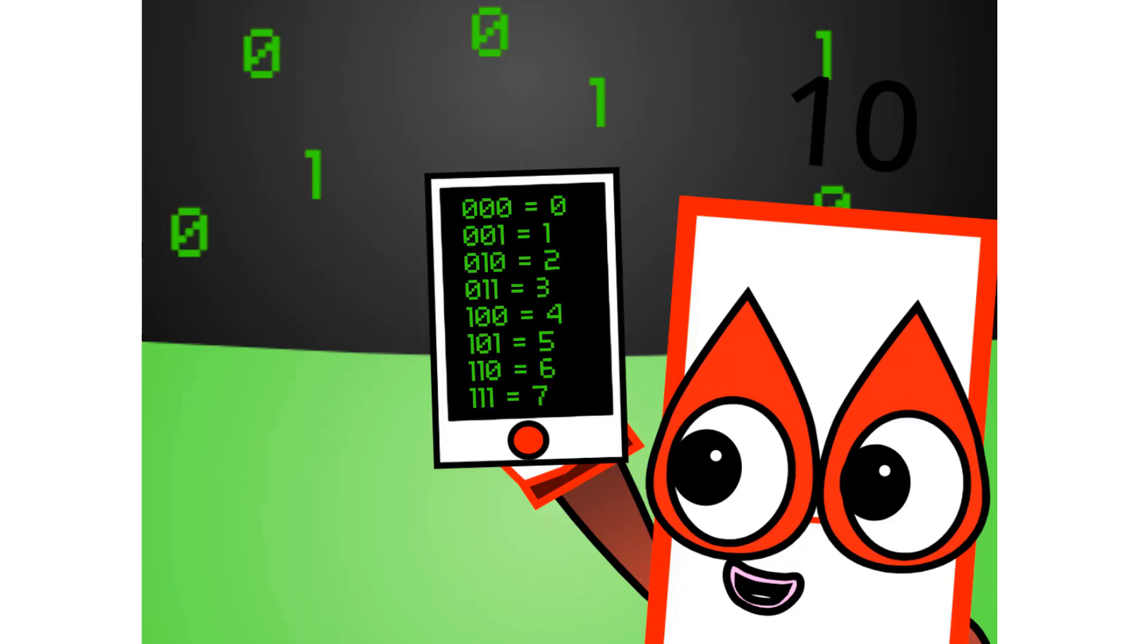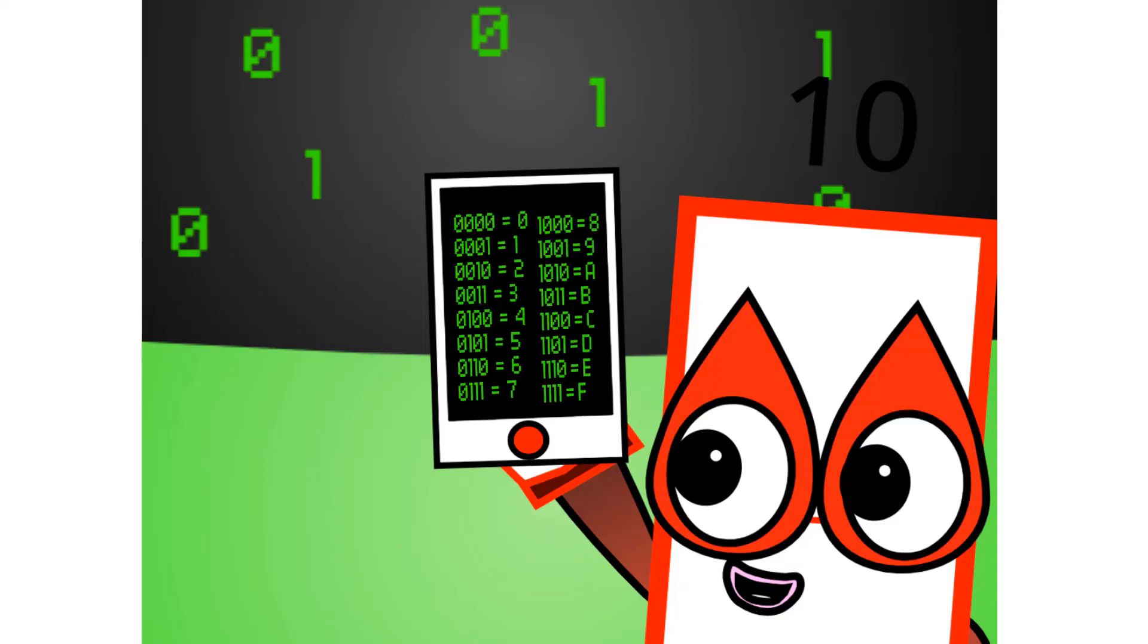There are 8 different combinations of 3-digit numbers in binary. This means that binary can easily be coded into octal. There are also 16 different combinations of 4-digit numbers in binary. This means that binary can easily be coded into hexadecimal 2.